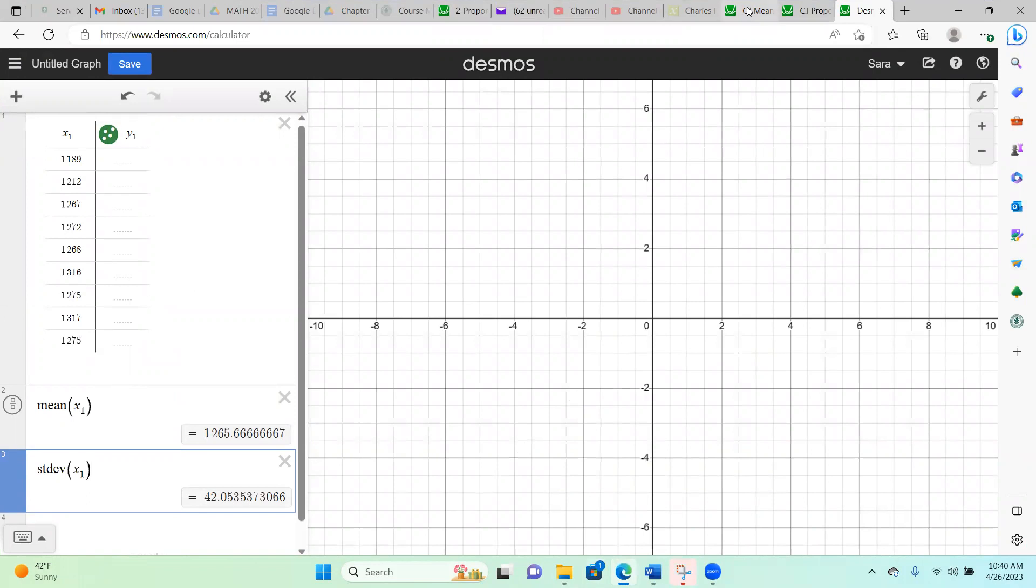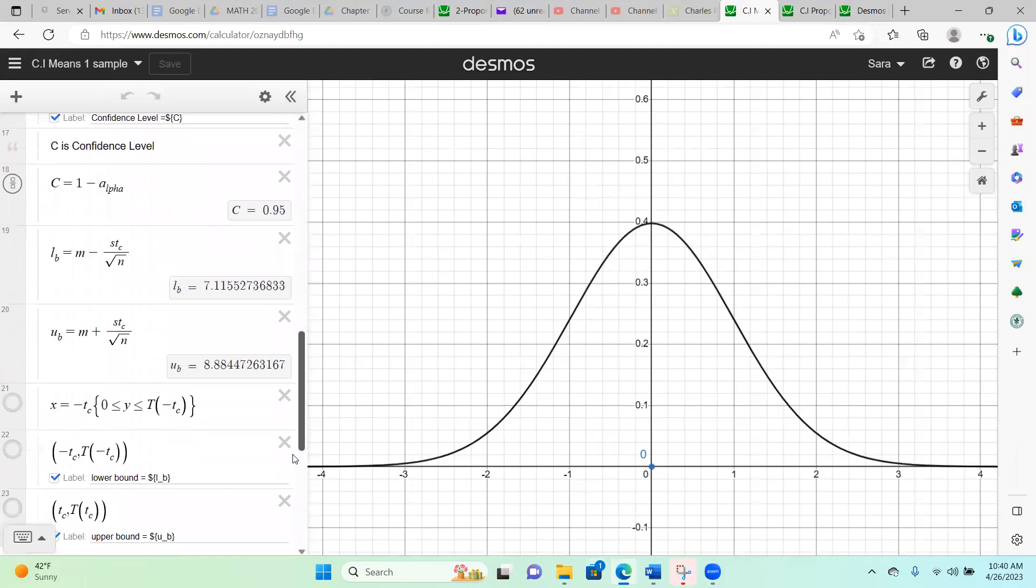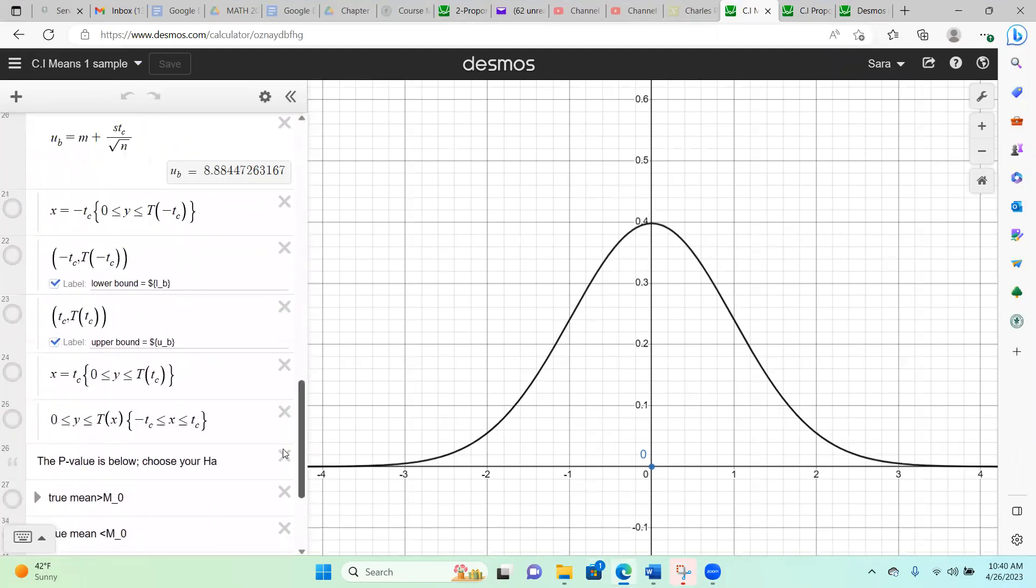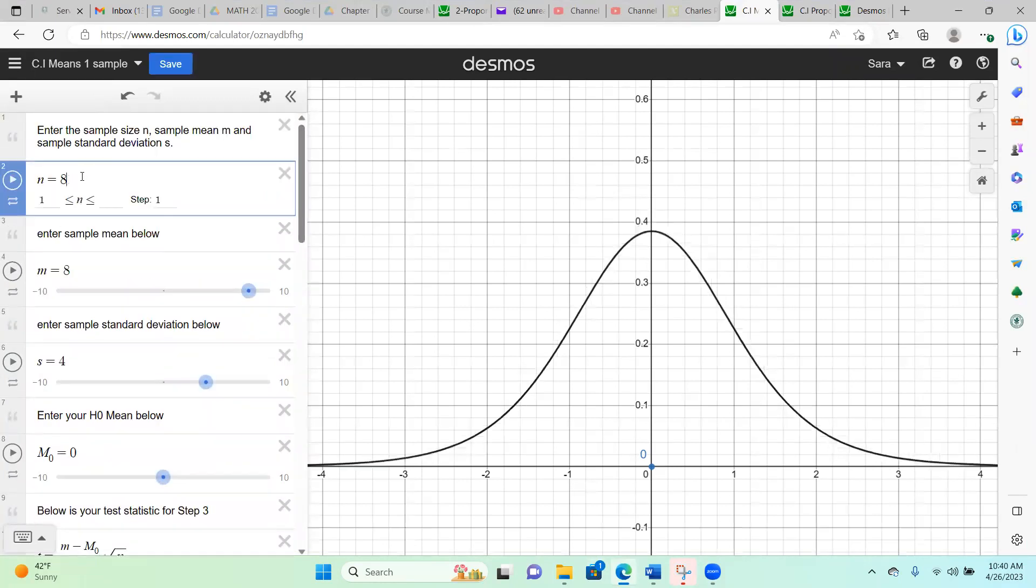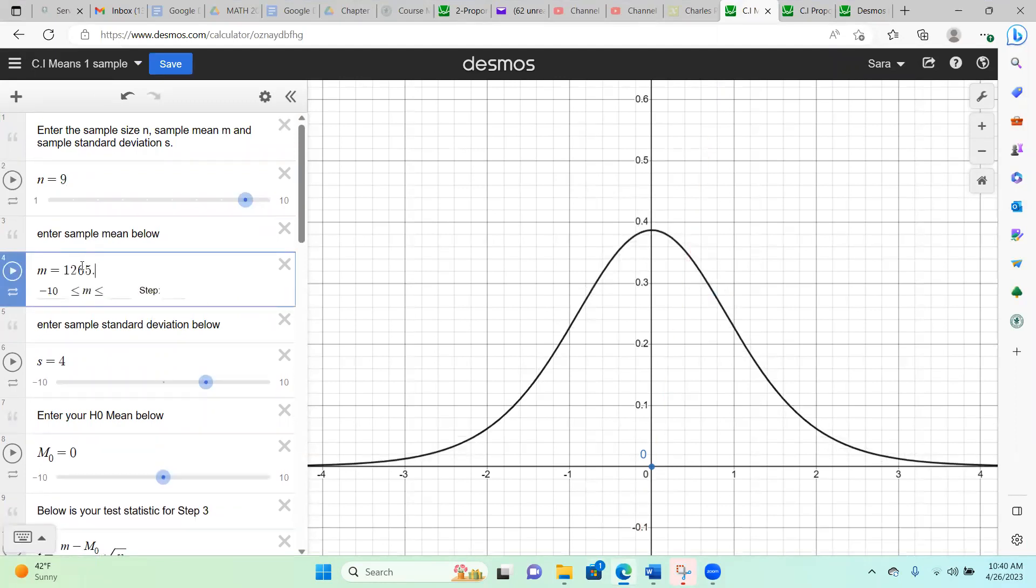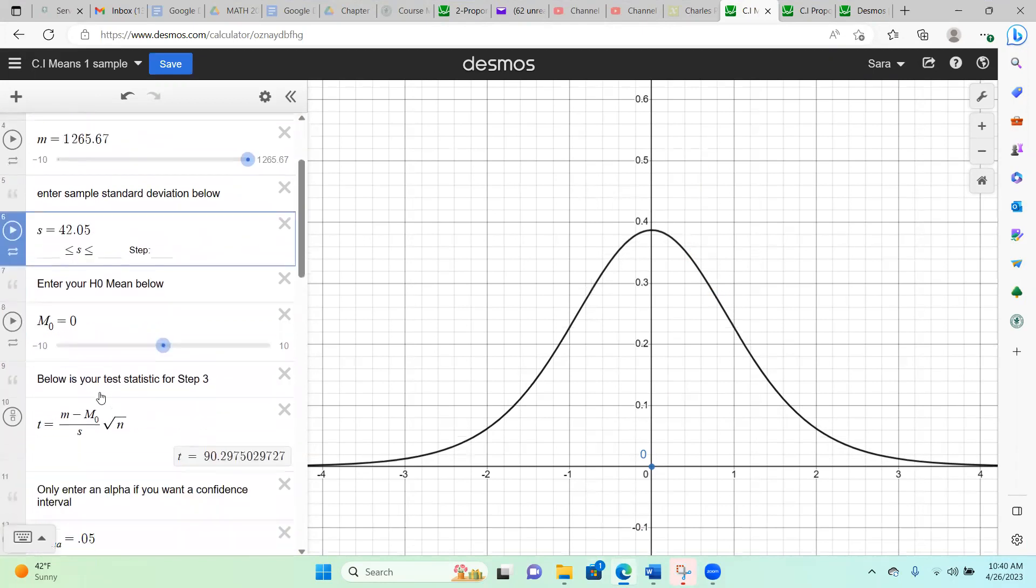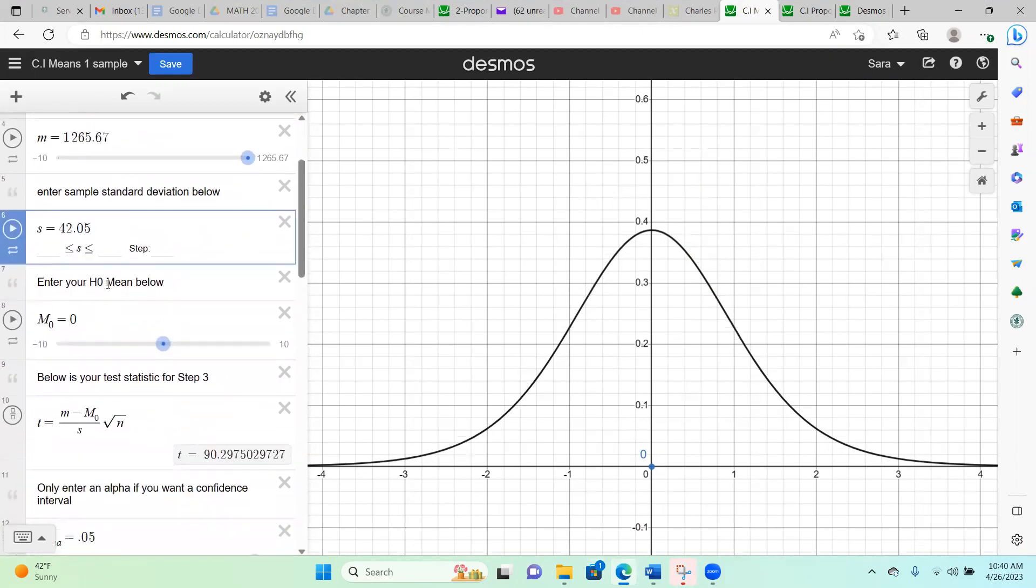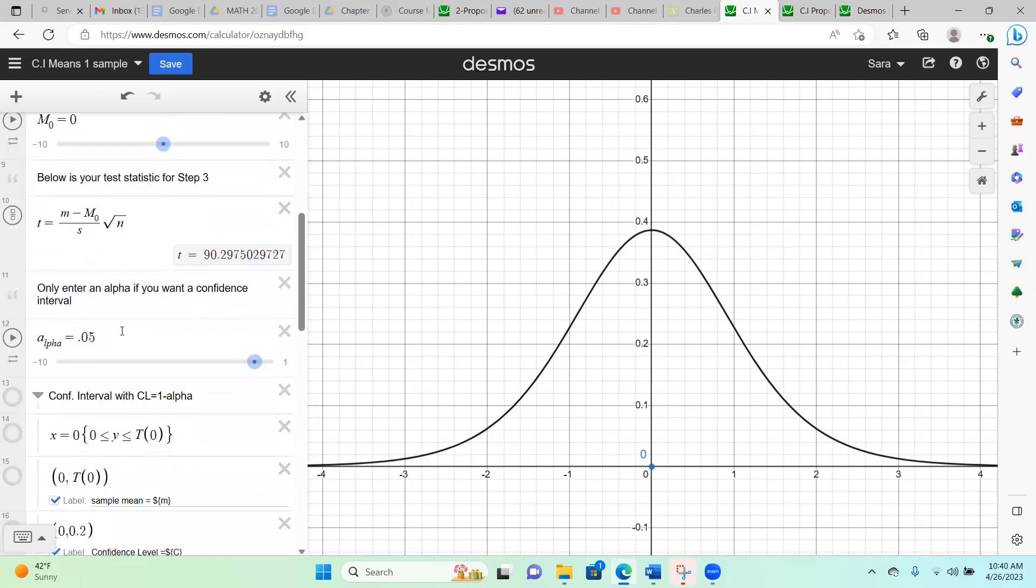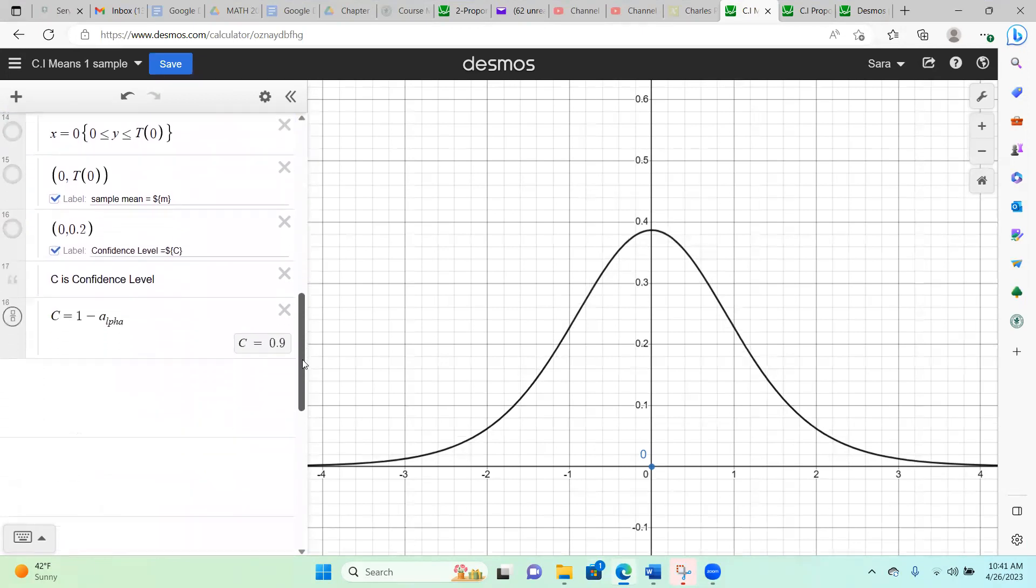Now I'm going to my Desmos program for the confidence interval for means. This also does the hypothesis test if you want but we're just going to use the confidence interval. So my sample size is 9, my sample mean was 1265.67, my sample standard deviation is 42.05, and we don't need this because we're not doing a hypothesis test. However we do need our alpha and alpha is 0.1.